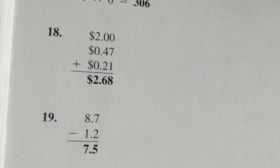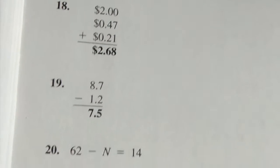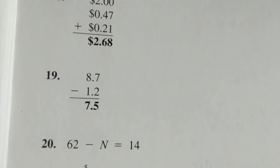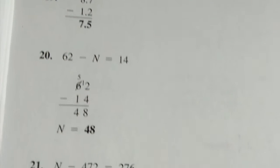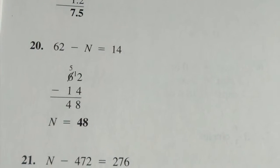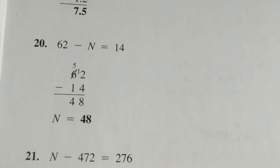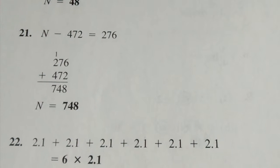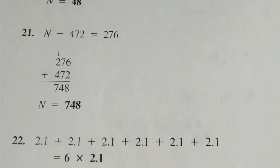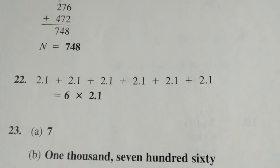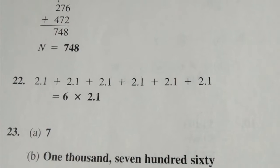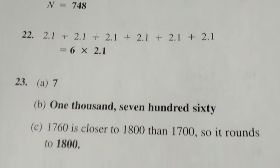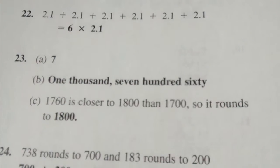Number eighteen: two dollars and sixty-eight cents. Number nineteen: seven and five-tenths. Number twenty: N equals forty-eight. Number twenty-one: N equals seven hundred forty-eight. Number twenty-two: six times two and one-tenth.